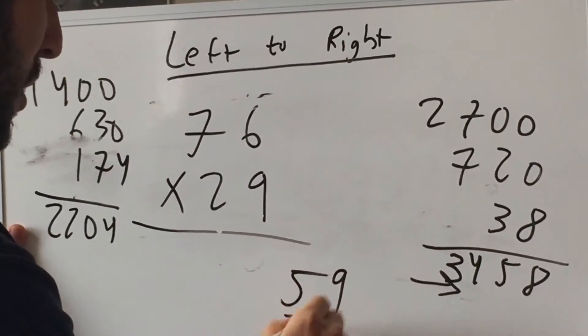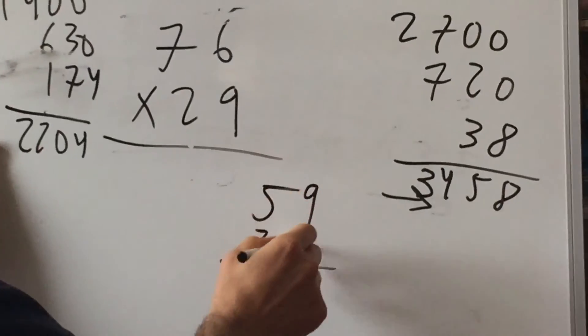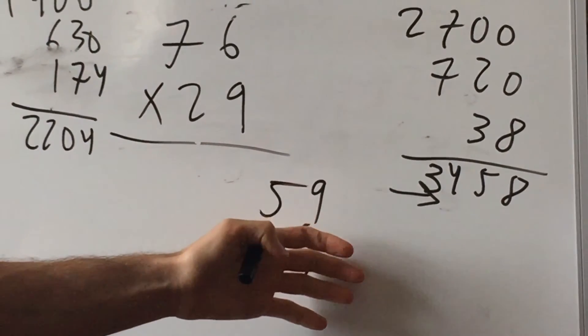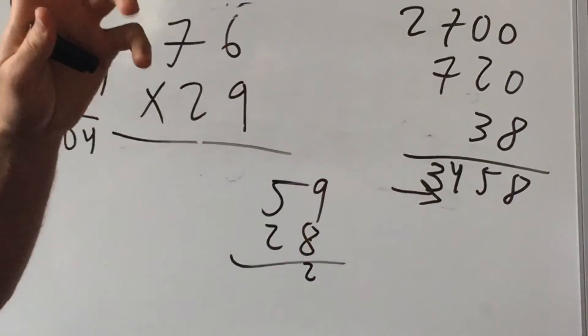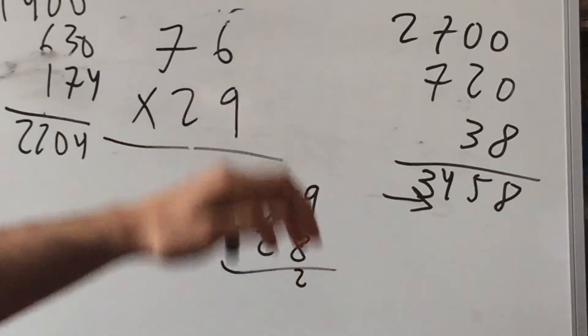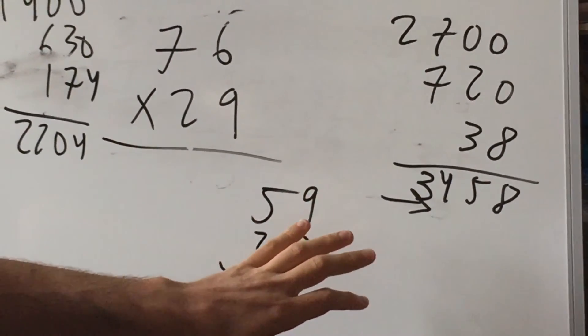So if I'm doing fifty nine times twenty eight you can do nine times eight ends in two carry the seven. The paper holds all the memory. Your mind can only hold a few things. So if you go this way in your heads and practice this for hours and hours you are not going to get much better.